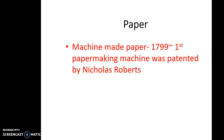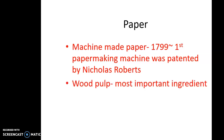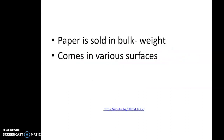Machine-made paper came about in 1799 — that's a date you probably need to know for the exam. The first patented paper-making machine was made by a man named Nicholas Roberts — another name you'll probably need to know for your exam. Wood pulp is considered to be the most important ingredient in paper making. Paper comes in various surfaces from smooth to rough, and you can also see a video link that will take you to a video watching traditional paper making with a water mill.